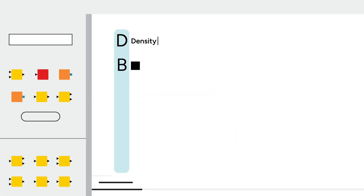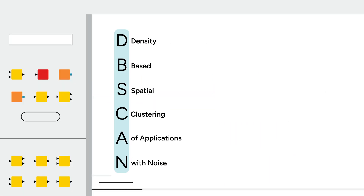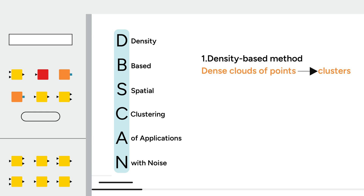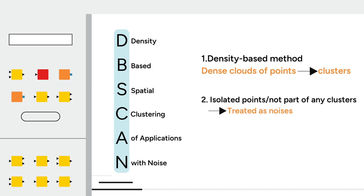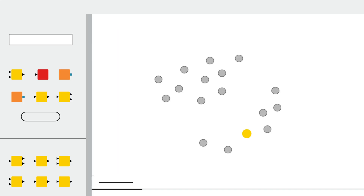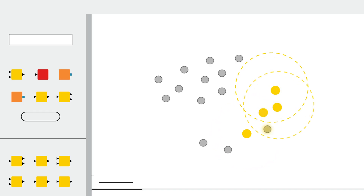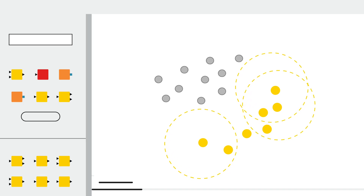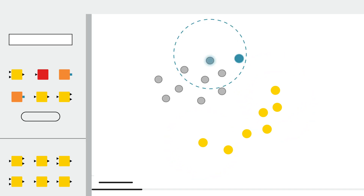DBSCAN stands for Density-Based Spatial Clustering for Applications with Noise. It is a density-based method that groups dense clouds of data points into clusters, treating isolated points as noise. The algorithm starts by randomly selecting a point. If enough points are within the neighborhood, they form a cluster. This process continues until no more points can be added to the cluster. Then another point is selected, and the process repeats.